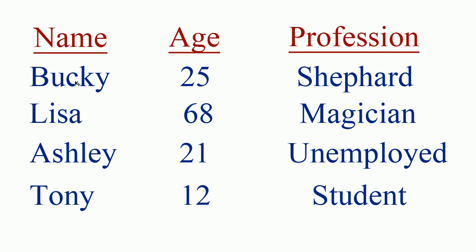The rows are a little different, because each individual entry goes on a separate row. The first entry is Bucky, who's 25, and his profession is a shepherd. Each row is like an individual entry — so for Lisa's entry it would be name: Lisa, age: 68, profession: magician.